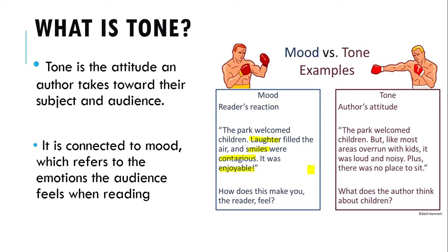In comparison, the author's attitude here: 'The park welcomed children. But like most areas overrun with kids, it was loud and noisy. Plus, there was no place to sit.' The author's tone is quite angry and frustrated. The reader's mood might also be angry and frustrated. Maybe the reader really identifies with this — they tried to go to a park to have a nice quiet lunch, and there were kids running and screaming and not being supervised, and there was no place to sit.